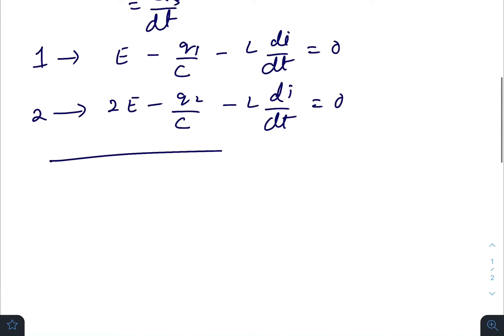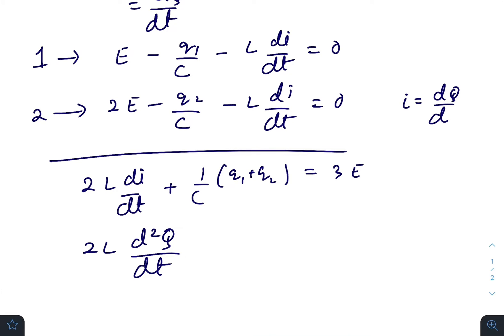If you add both these equations, you get 2L di/dt plus (1/C)(q₁ + q₂) = 3ε. Or you can modify the equation like this: as we know that i is rate of change of capital Q, which gives L dQ/dt + Q/C = 3ε.